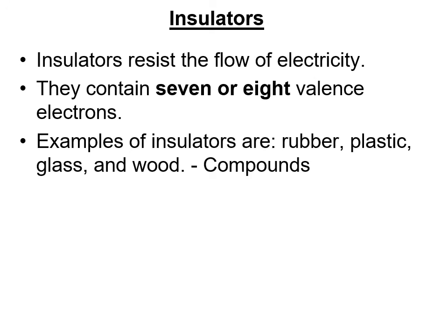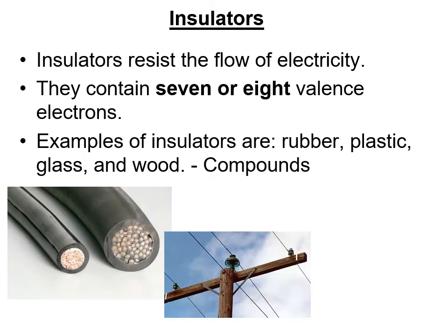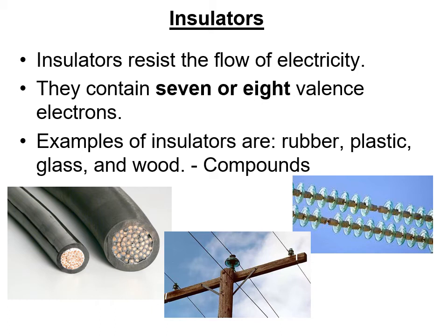Insulators insulate or resist the flow of electricity. They contain seven or eight valence electrons in their outermost shells. The best examples are compounds such as rubber, glass, wood, and plastics, where there are strong chemical bonds keeping electrons in their orbits, making it very difficult to move electrons out of orbit and allow the flow of electricity through the material.